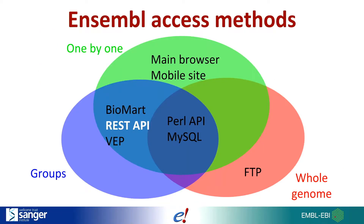We have a number of ways to access Ensembl data depending on the scale you need. Many of you probably are familiar with the genome browser. We also have a Perl API where you can bulk access our data via FTP site or access our MySQL servers directly. Today we'll be focusing on the REST API.